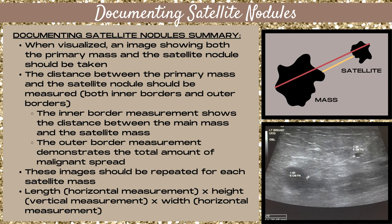The inner border measurement shows the distance between the primary mass and the satellite mass, and the outer border measurement demonstrates the total amount of malignant spread within the tissue between those two areas. These images should be repeated for each satellite mass. If there are many satellite masses, generally pick the three that are the furthest away from your primary mass.